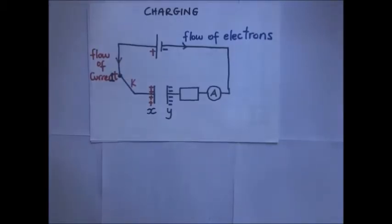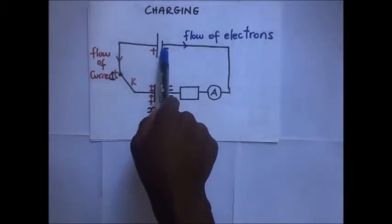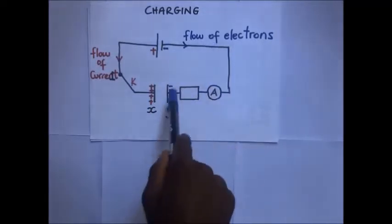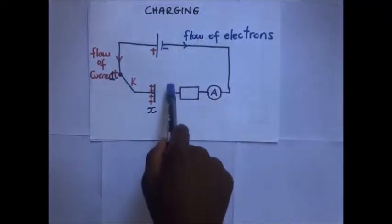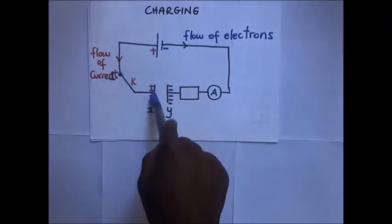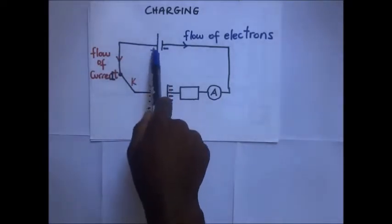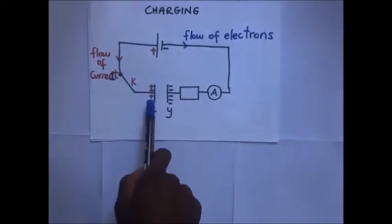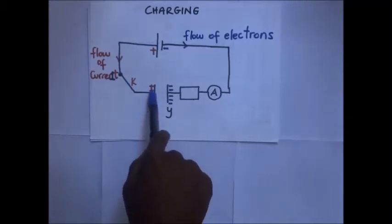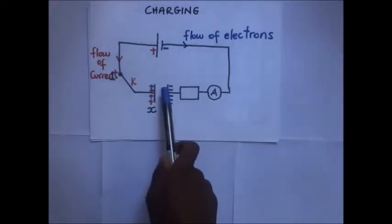Electrons flow from the negative terminal of the battery to plate Y. The negative terminal repels electrons, causing them to concentrate on plate Y — so plate Y becomes negatively charged. Likewise, the positive terminal attracts electrons from plate X, leaving an excess of positive charges there, so plate X becomes positively charged.